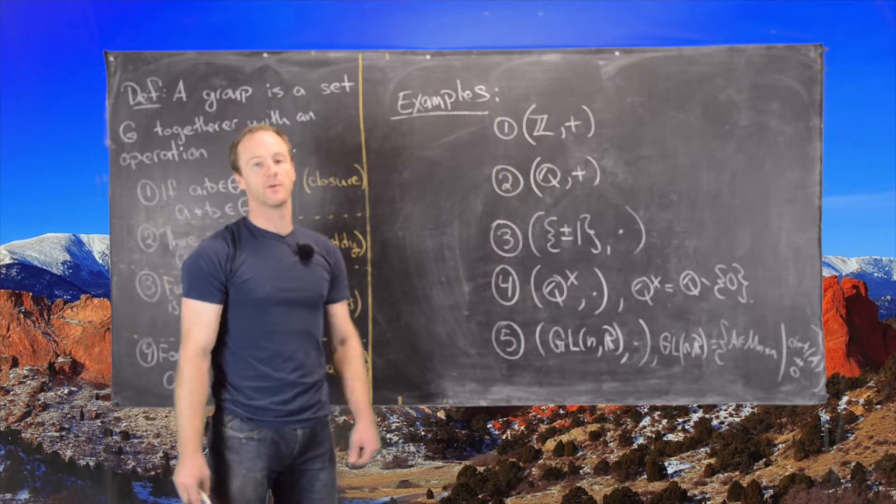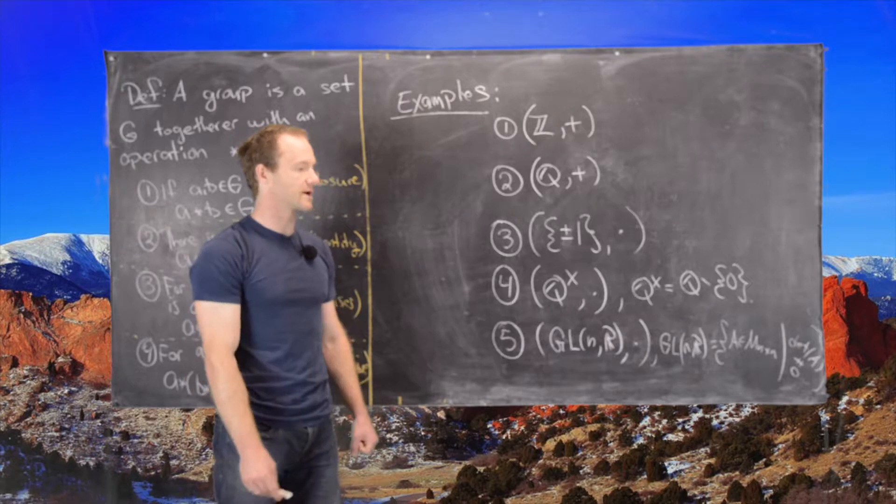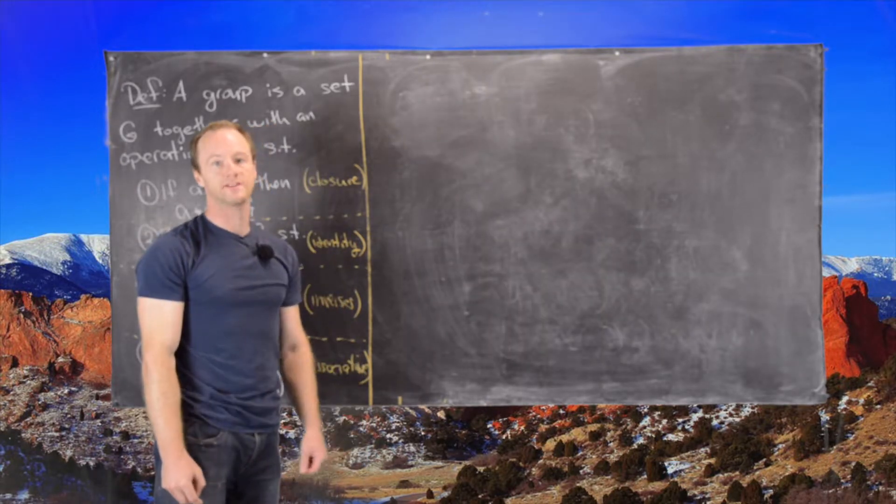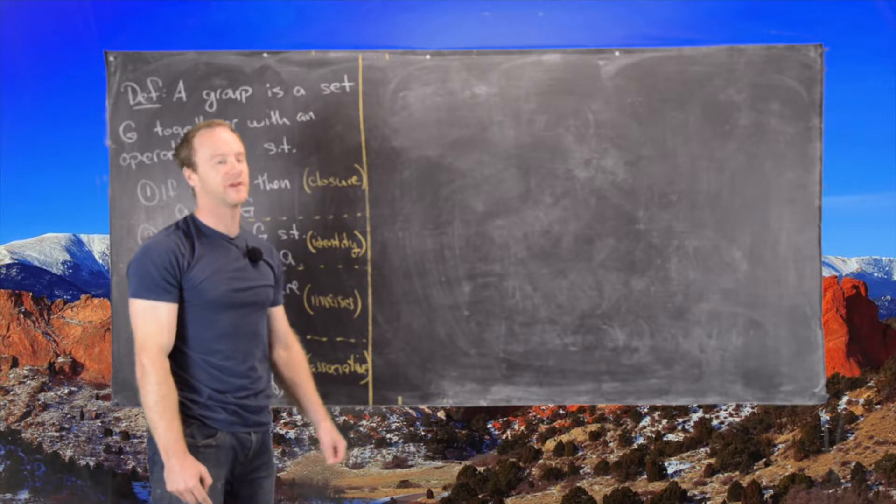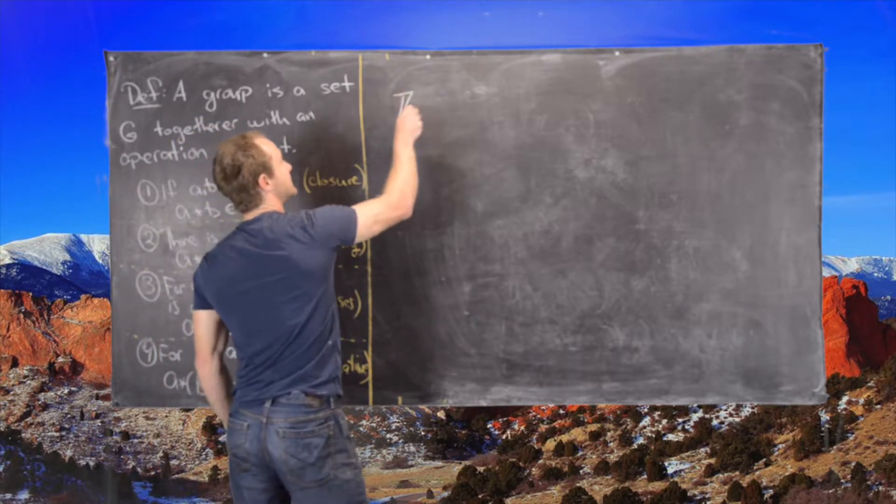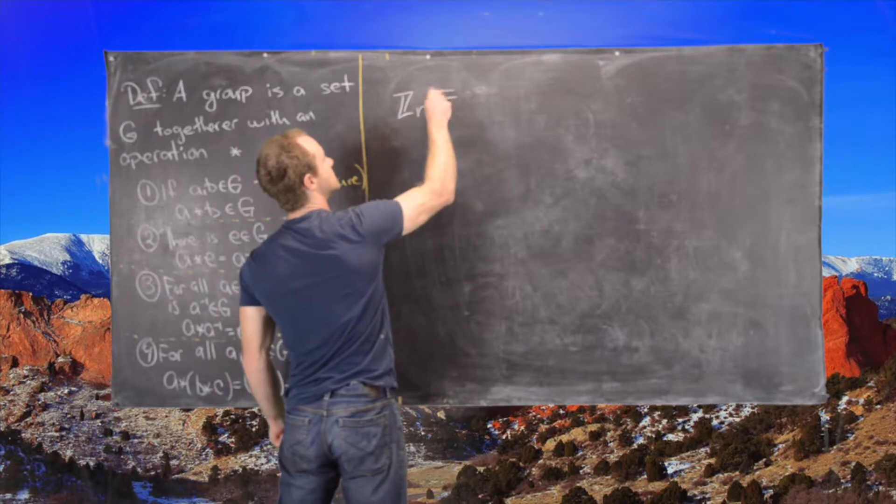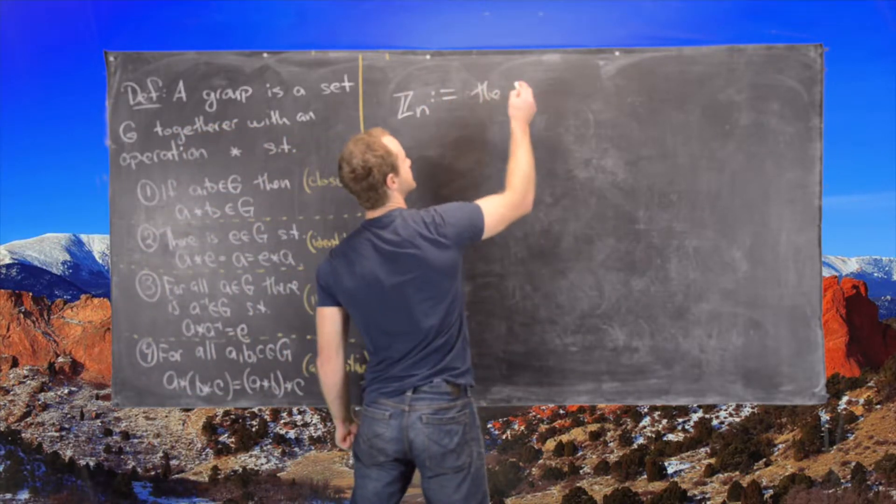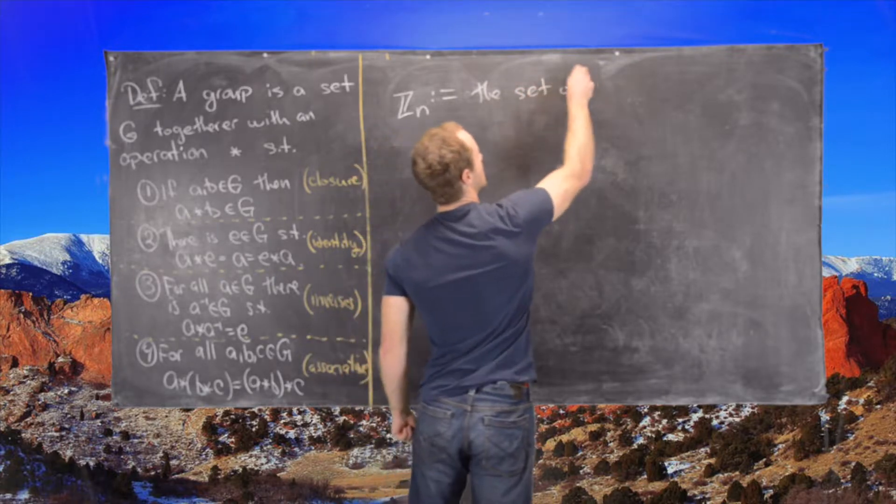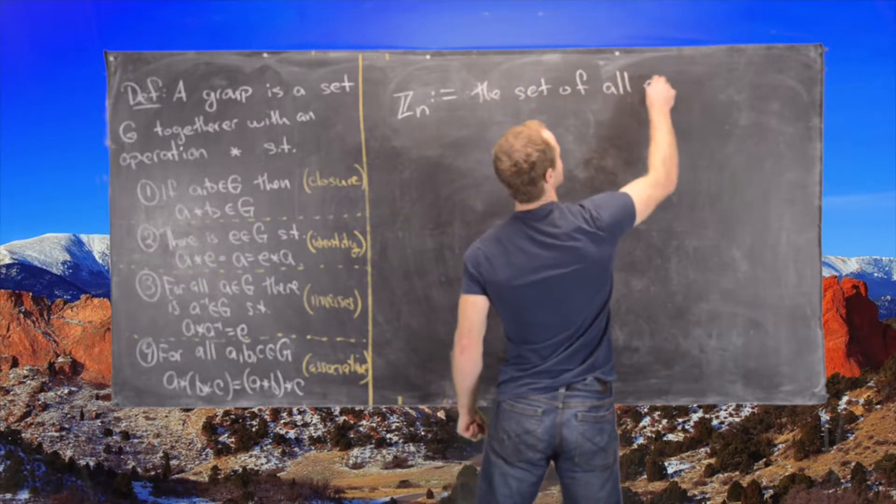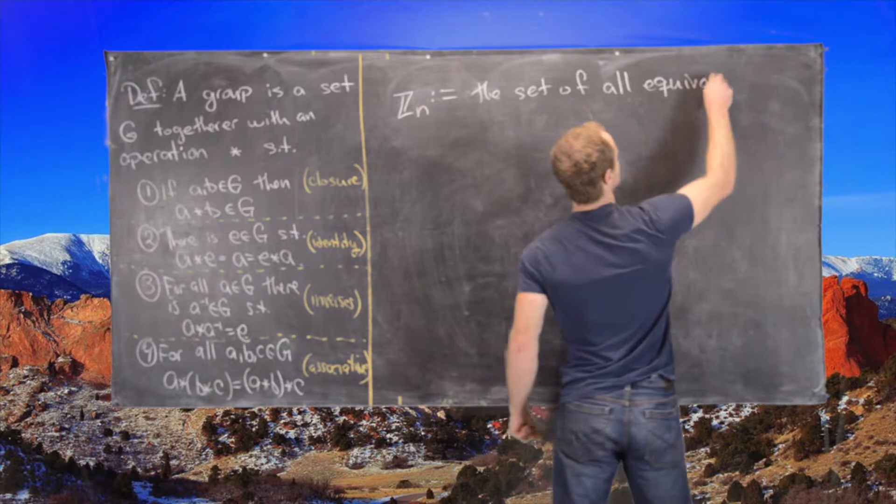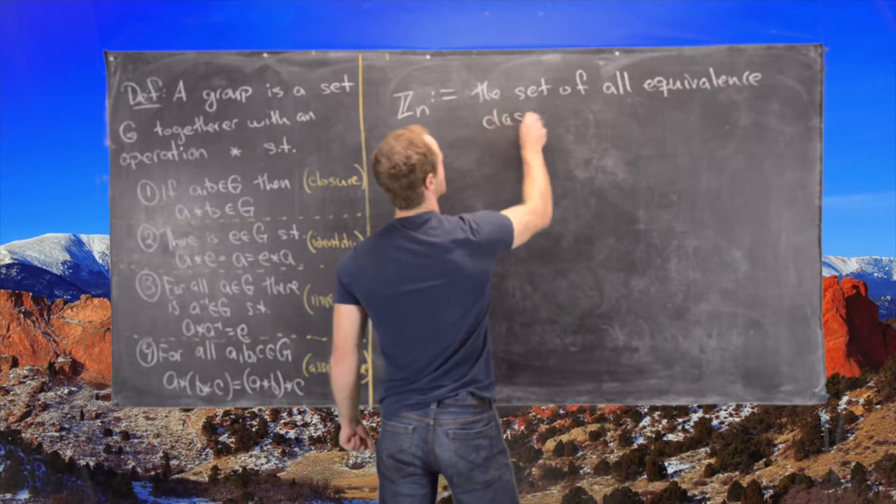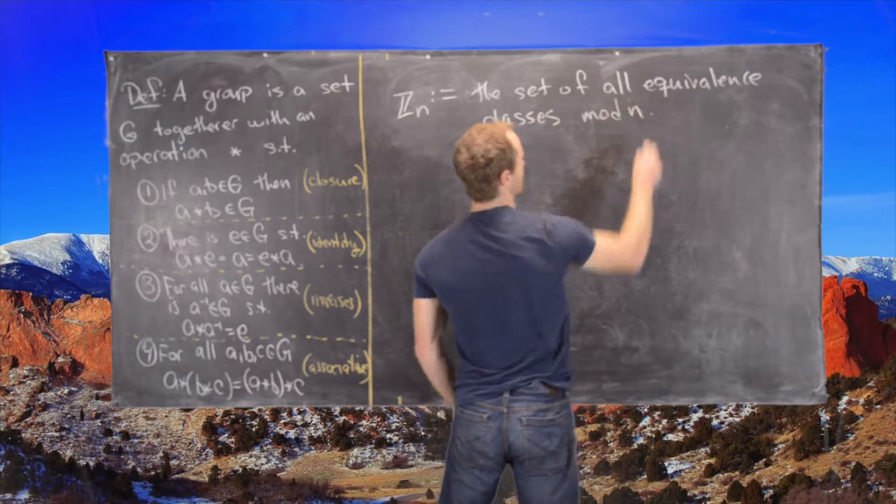So now I'll clean up the board and we'll look at some more examples that have a little more applications to number theory. Okay, so moving on to some more number theoretic examples. Let's define Z_N to be equal to the set of all equivalence classes mod N.